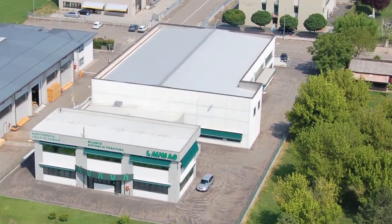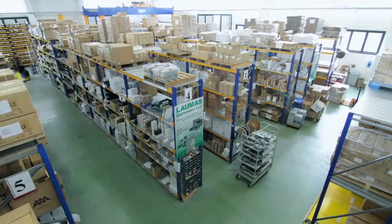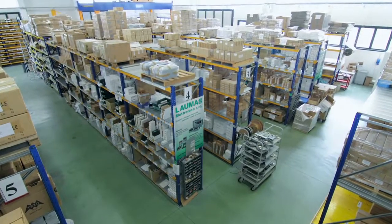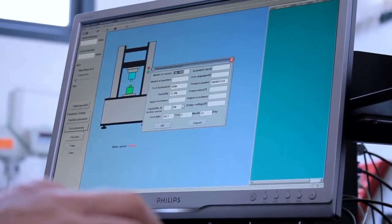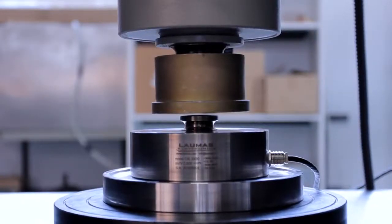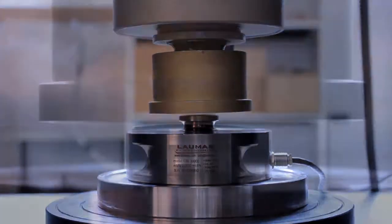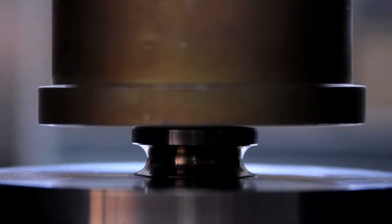The facility covers an area of approximately 2,000 square meters. Laumas cutting-edge equipment tests various electronic and mechanical components in order to guarantee the product's quality.